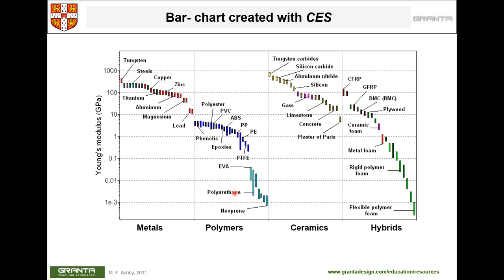The same plot can be expanded to show individual materials within each group. If you want a material with Young's modulus greater than a certain value, you select all materials above that threshold line. These figures can be plotted in the CES software.